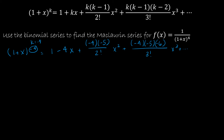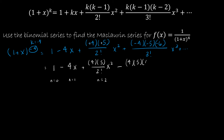Now I'm going to do a little bit of cleanup before writing this as a series. So 1 is still 1, and then this is minus 4x. The next term is a negative times a negative, which is positive, so I'll write it as 4 times 5 over 2 factorial — because I'm not trying to find the answer, I'm trying to find the pattern. This is when n equals 0, n equals 1, n equals 2. The next value is negative times negative times negative, so that would be minus 4 times 5 times 6 over 3 factorial times x cubed, and so on.